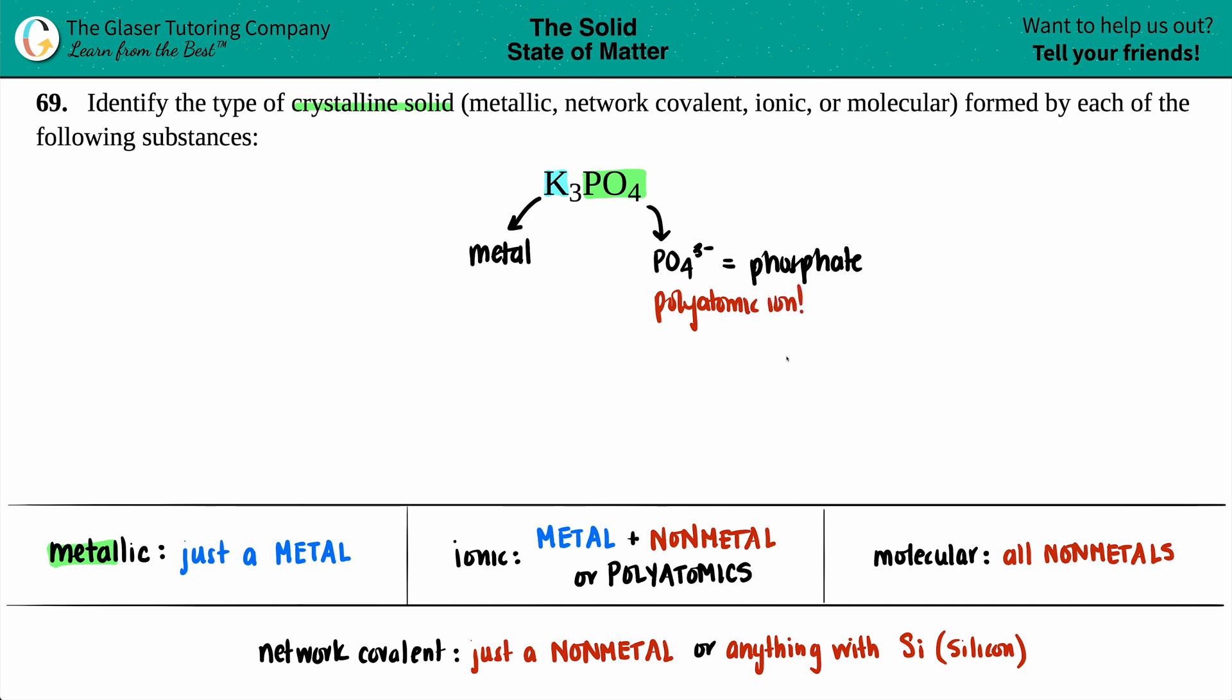And when you start seeing polyatomic ions, it's going to be an ionic crystalline solid. And there you go, let's color it and call it a video.